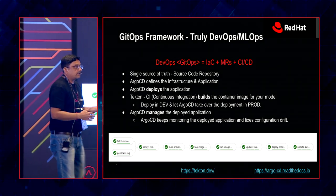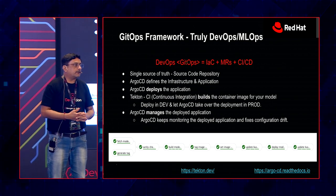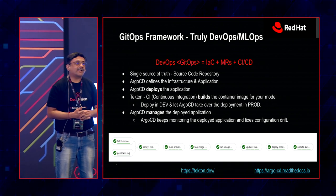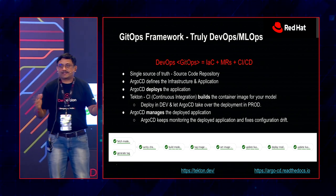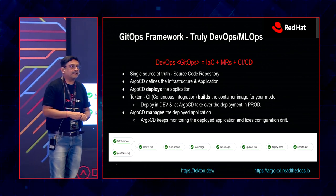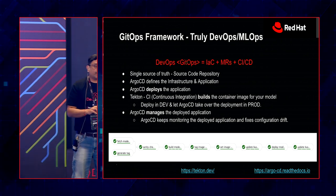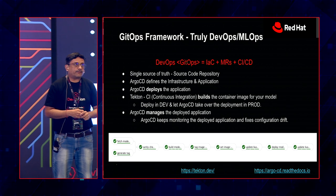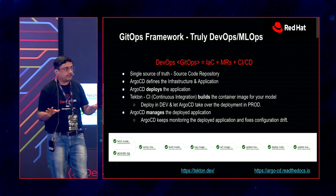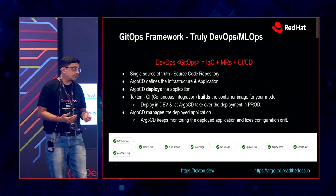There is Tekton, which does the continuous integration. How many of you have heard of Tekton before today? It's having good traction. And Jenkins? More hands. If you truly want to fit into the GitOps strategy, have CI separate and CD separate. I recommend this as a best practice to customers: the developer should not be doing deployments. They should not have access or visibility to production.